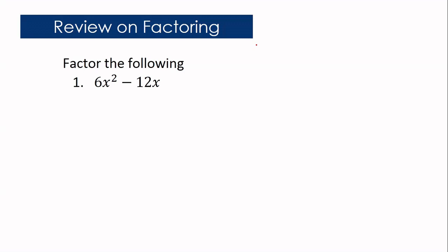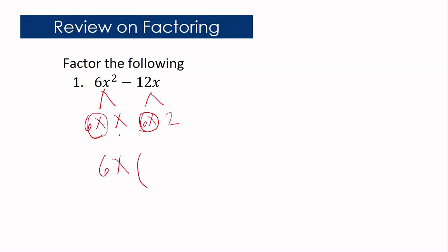Let us factor 6x squared minus 12x. How many terms do we have here? There are two terms. Do they have a common factor? Yes, so we are going to identify their greatest common factor. The factors of 6x squared are 6x and x, while 12x gives us 6x and 2. The greatest common factor is 6x, which will be our monomial, and the remaining factors x and 2 form our binomial. Following the sign of the given expression, minus, the factors are 6x and x minus 2. This process is called common monomial factor.